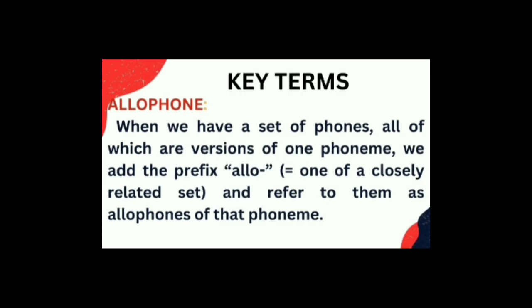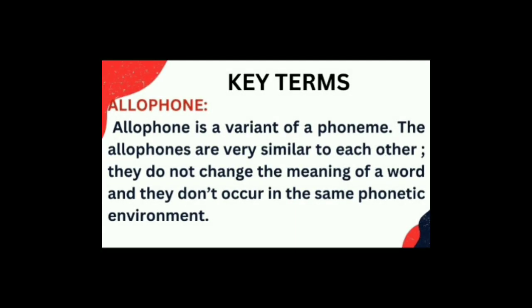Allophone: When we have a set of phonemes, all of which are versions or variations of one phoneme, we add the prefix 'allo', meaning one of a closely related set, and refer to them as allophones of that phoneme. Allophone is a variant of a phoneme. Allophones are very similar to each other, they don't change the meaning of a word, and they don't occur in the same phonetic environment.